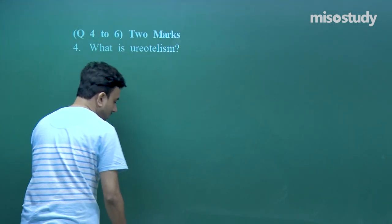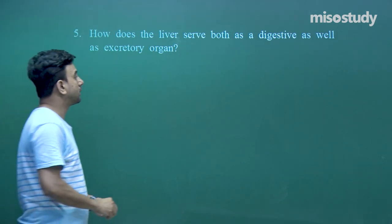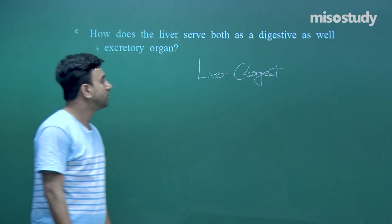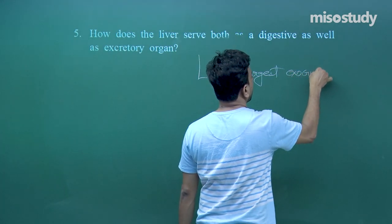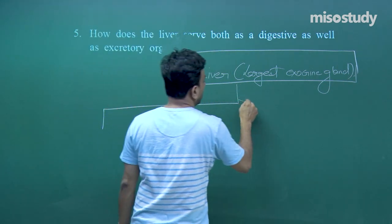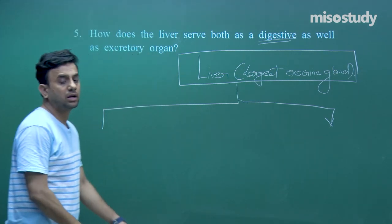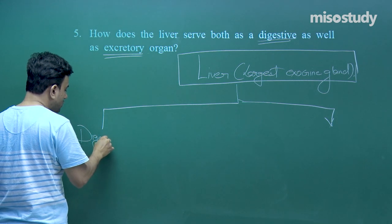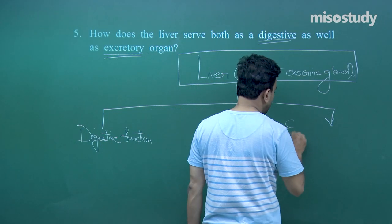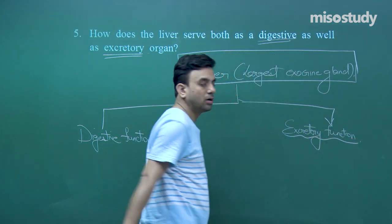We move on to the next question: how does the liver serve both as a digestive and as an excretory organ? The liver is the largest exocrine gland. It serves both a digestive function and an excretory function.